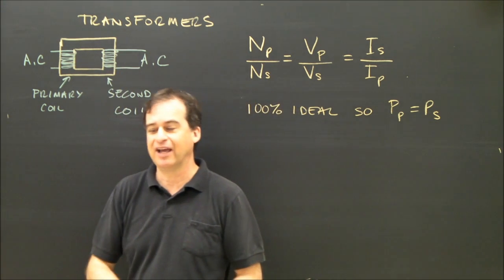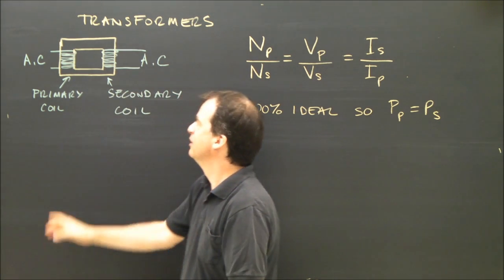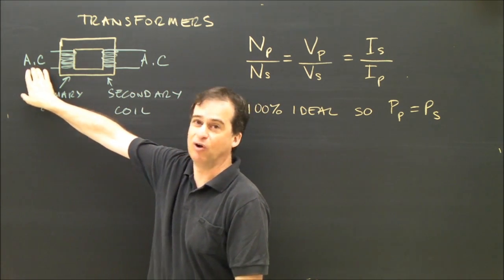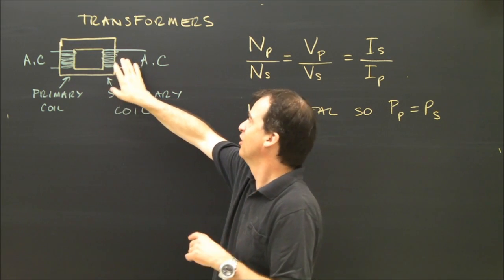The thing about a transformer is it has to use alternating current. And I'm not going to get into an explanation of why at this point, but it has to be plugged into alternating current on this side, and it will generate alternating current with a different voltage on this side.